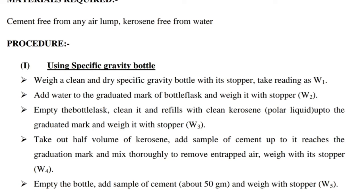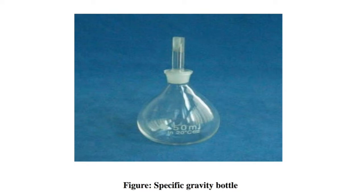Next, empty the bottle, add a sample of cement of about 50g, and weigh with the stopper as W5. The figure shows the specific gravity bottle.